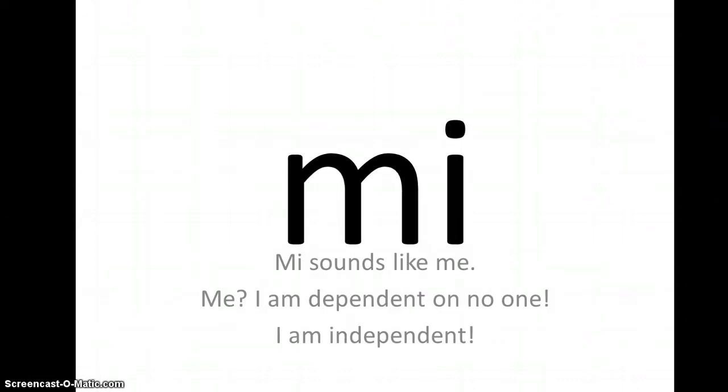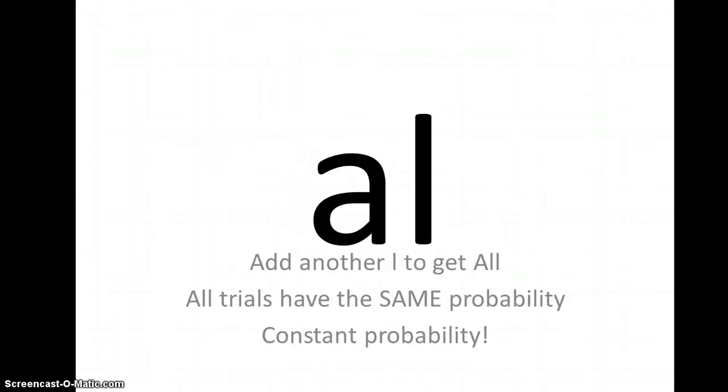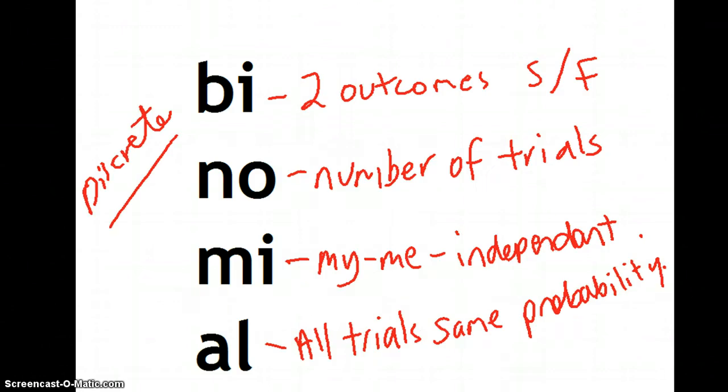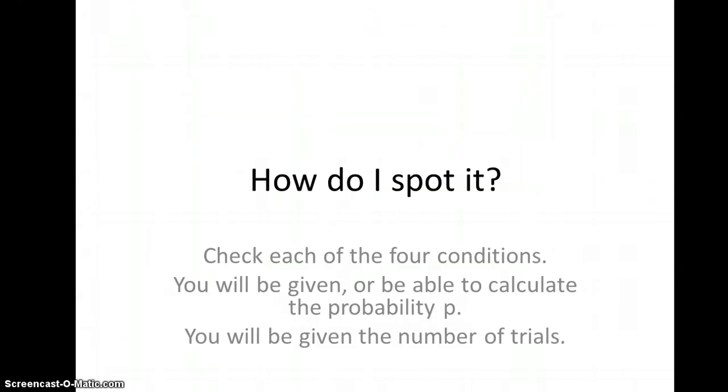Mi, depend on no one, independence. All. All of the trials have the same probability, constant probability. So that's how we want to remember binomial, because it's got four conditions. How do we spot it? We check out the conditions.